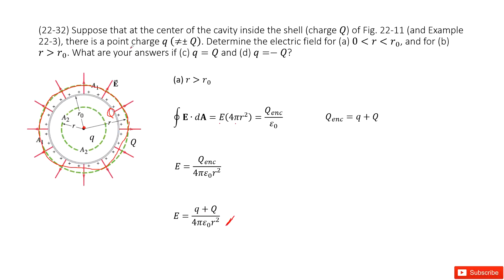We get the answer. The next part asks what are your answers if small q equals capital Q. Similarly, the enclosed charge is small q plus capital Q. Replace small q with capital Q, so this is 2Q. Then replace the enclosed charge as 2Q to get the answer.